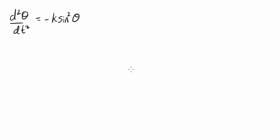Consider the differential equation given here, where k is a constant. If we put k squared equal to g over l, this gives the equation of motion for the simple pendulum. The equation of motion for the compound pendulum also has this form.